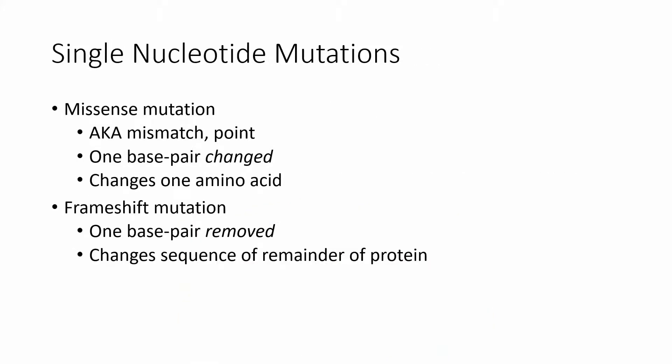There are a number of single nucleotide mutations. You can change a single nucleotide — for example, an A to G mutation where an A is replaced by a G. For the most part this is going to change a single amino acid — that is a missense mutation, which will change the protein, so this is not a silent mutation. Then you can have a frameshift mutation, where you either remove or add an extra nucleotide. This shifts the reading frame over, and when that happens, it changes the entire rest of the protein.